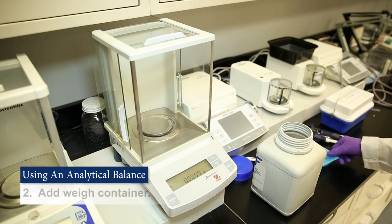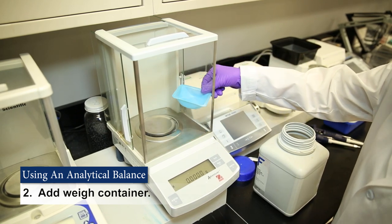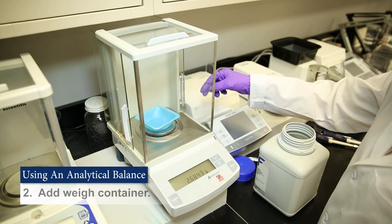Once your balance is on, you'll want to add a container or a piece of weigh paper or a beaker to hold your material separate from the pan of the balance.